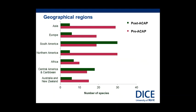Looking at the geographical distribution of captive breeding and reintroduction programs — green bars representing post-ACAP, purple bars pre-ACAP — there has been a relative increase in South American and Central and Caribbean species involved in these programs post-ACAP, and a relative decrease in Europe, Australia, New Zealand, and North America. This geographic shift is statistically significant.